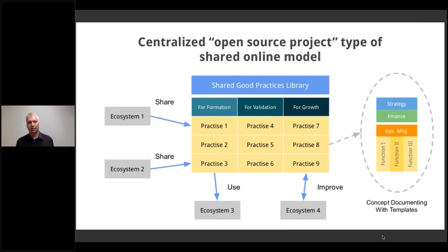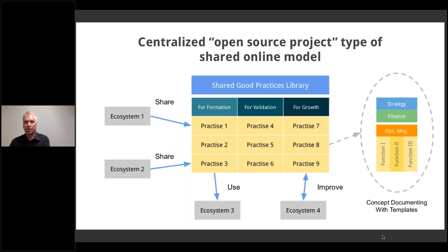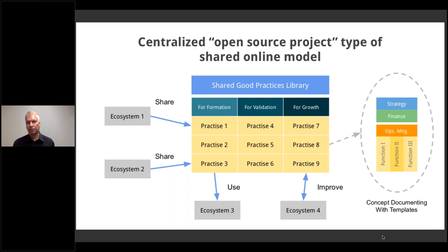The solution is to have a centralized open-source project type of shared online model — the same as shared IPs, shared applications as open source, or an innovation entrepreneurship curriculum as an educational shared asset. The key is to also build this type of library as a shared format. This can be as simple as a well-coordinated Google Spreadsheet in the beginning, but over time a dedicated tool will help. Each practice needs to be documented in a logical, structured, and productized way.